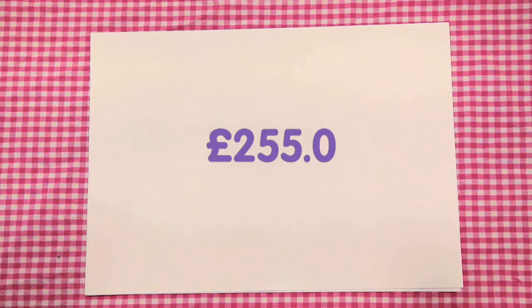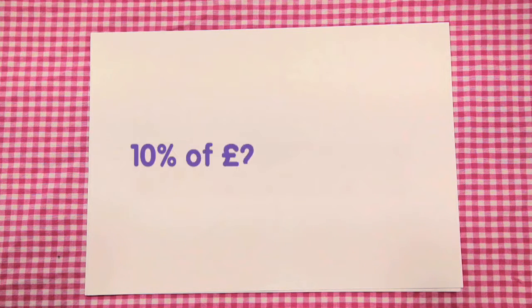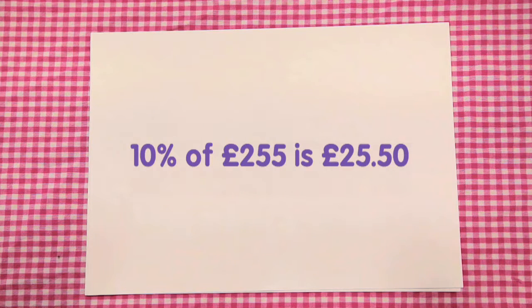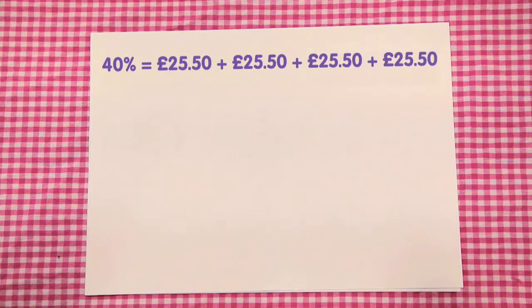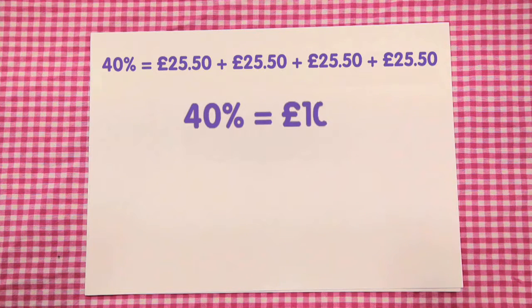£255.0 becomes £25.50. Therefore, 40% equals £25.50 plus £25.50 plus £25.50 plus another £25.50. So 40% equals £102.